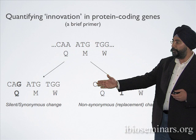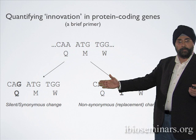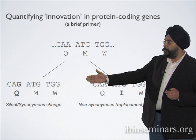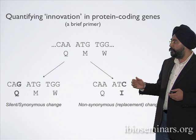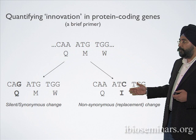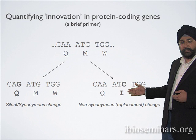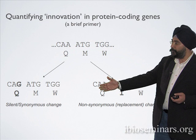You can see a mutation that does not alter the amino acid being encoded — we refer to these as silent or synonymous changes, because natural selection is really acting on the protein-coding sequences, and since the protein-coding sequence has not changed, these are called synonymous changes. In contrast, we have a single amino acid mutation which has altered one of the amino acids being encoded — so-called non-synonymous or replacement changes.